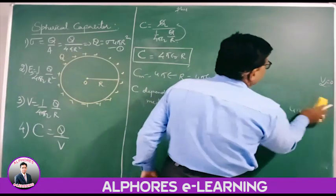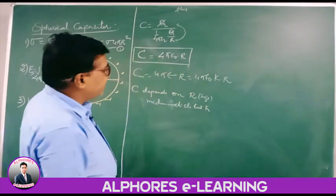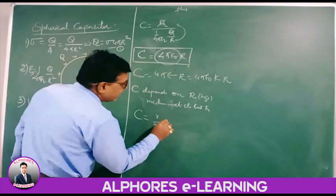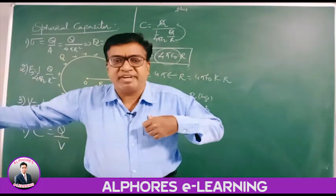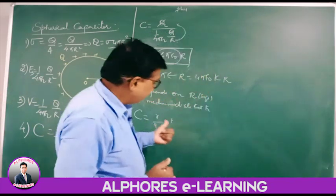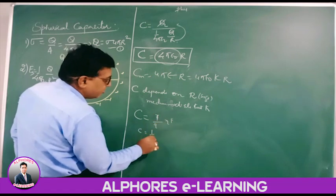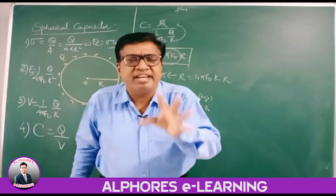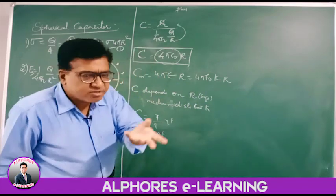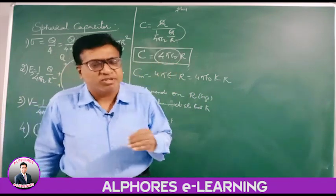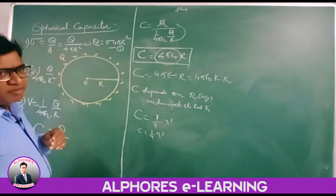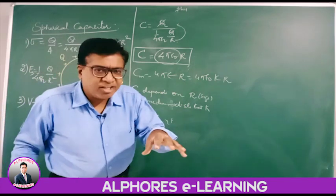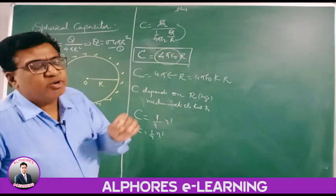The basic demerit of a spherical capacitor: if I take the value — for a sphere of radius 1 meter (a very big sphere), substitute into C = R/9 nanofarads, its capacity is only 1/9 nanofarads ≈ 0.11 nanofarad. A sphere of radius 1 meter — a very big metal sphere — gives a capacity of hardly 0.11 nanofarad. The size is big but the capacity is very small.